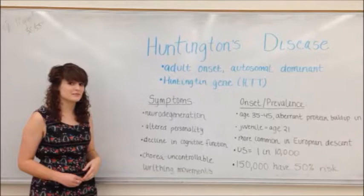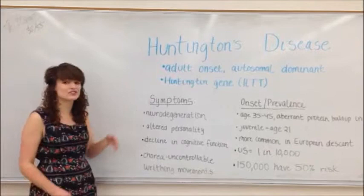Huntington's disease is an adult-onset autosomal dominant disease. It occurs due to a mutation in either one or both copies of an individual's Huntington or HTT gene.